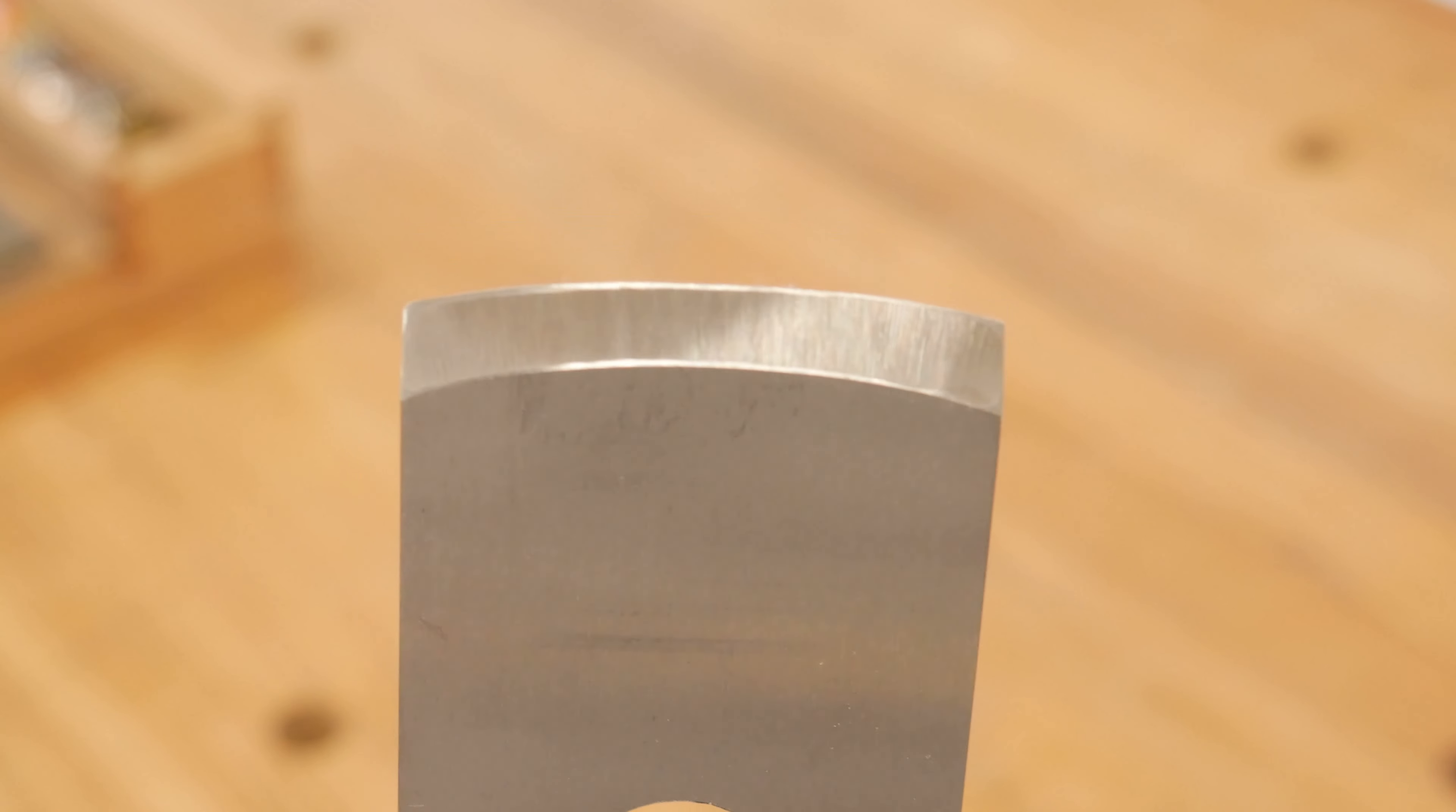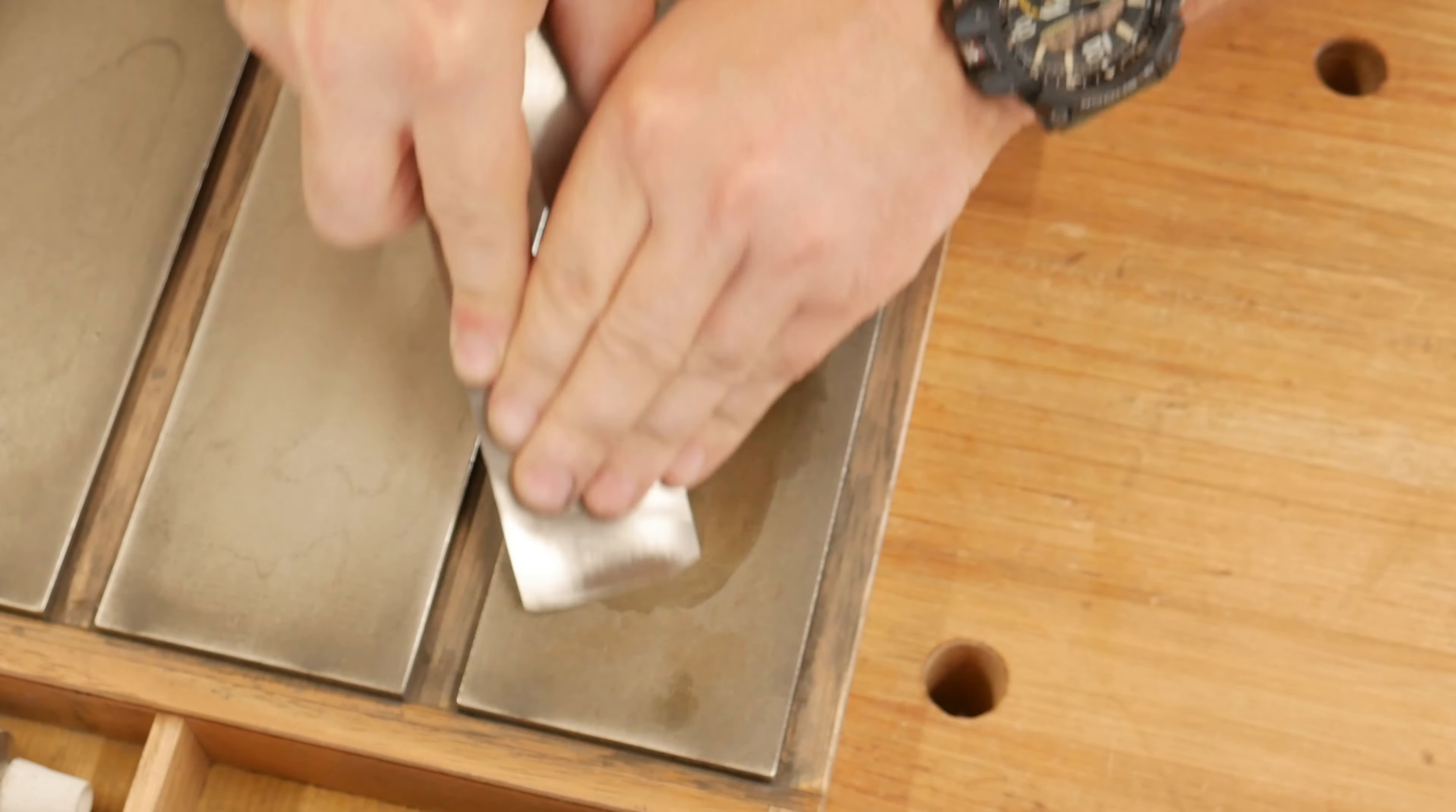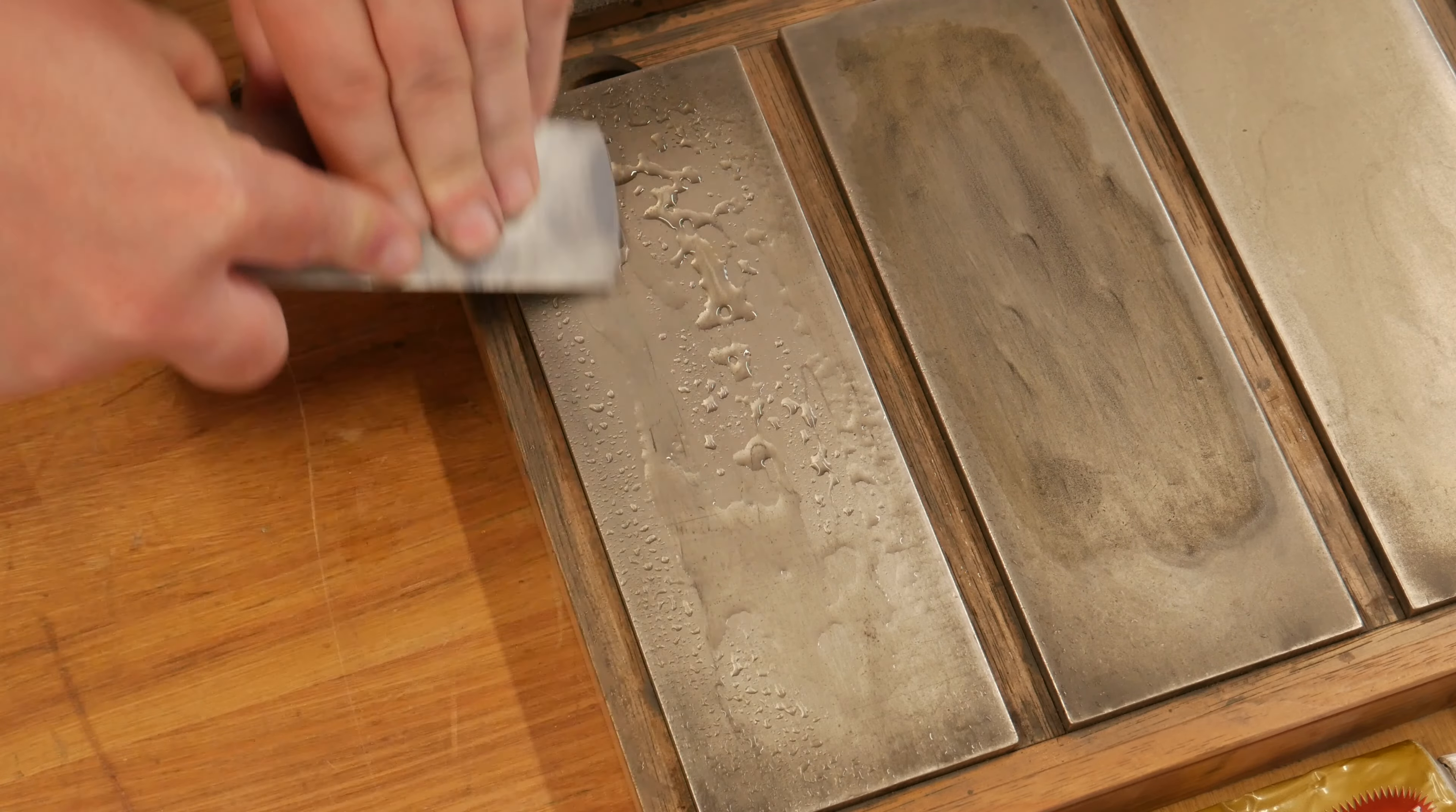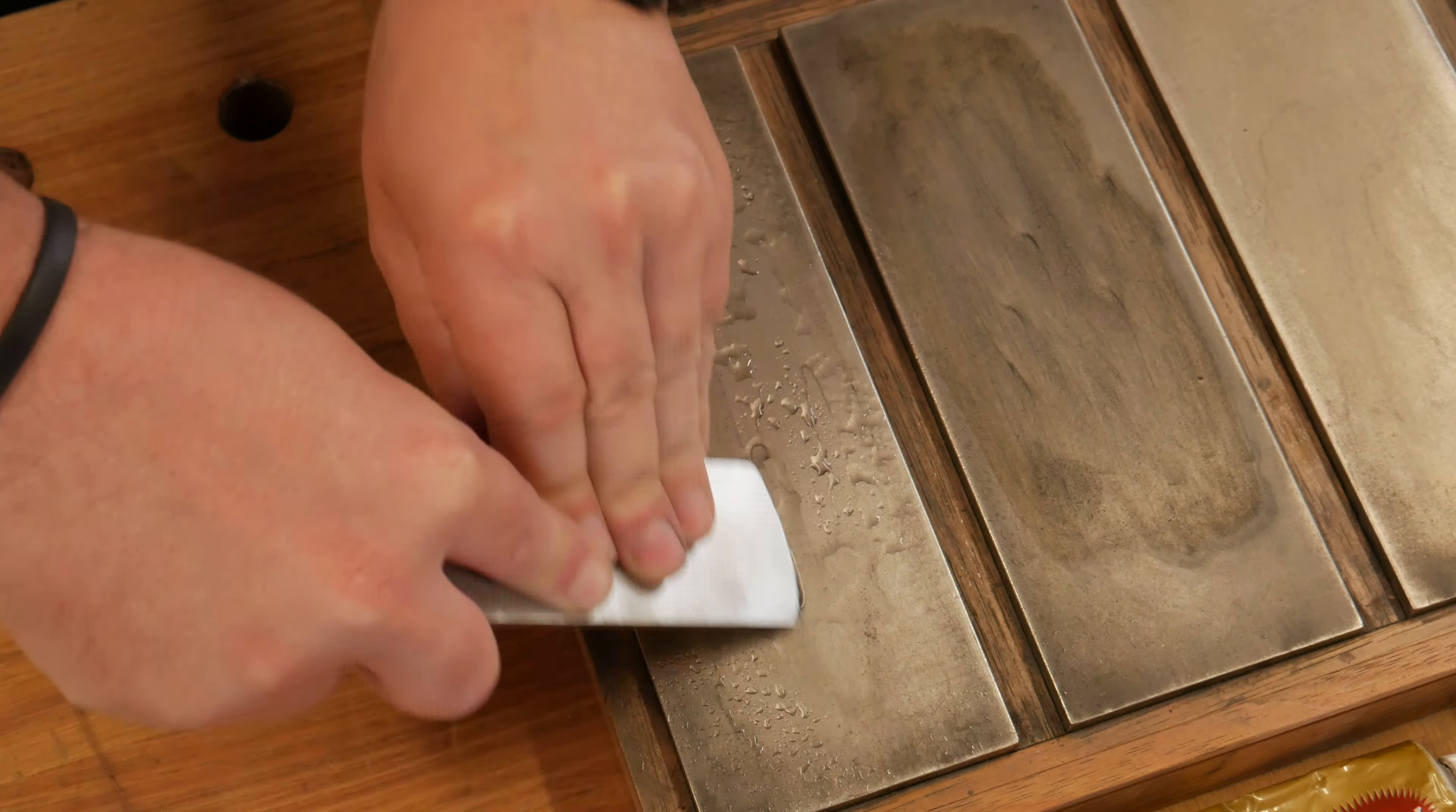At this point I have a blade roughed out with what we call a hollow grind. Then it's off to the diamond plates, and in a figure eight motion starting at the course plate and then working my way through to extra fine, refining the edge until I feel a burr, then a touch up on the back.